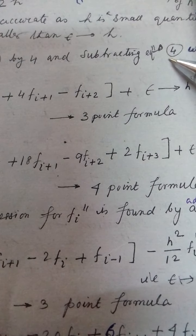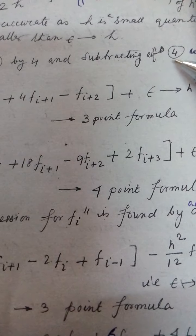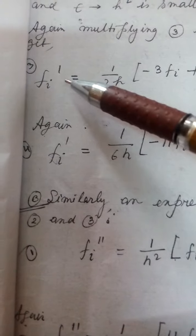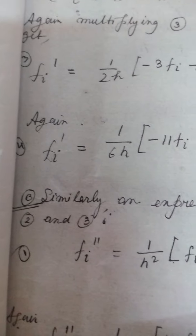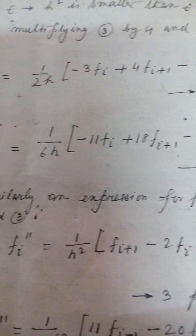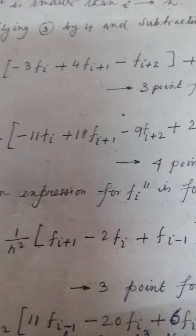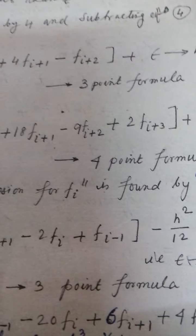Again, multiplying 3 by 4 and subtracting from equation 4, we get this one. These are the different formulas for the first derivative. Now you can get it from the four equations which I have given you.